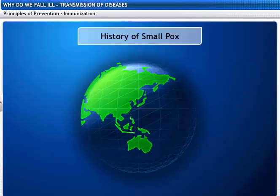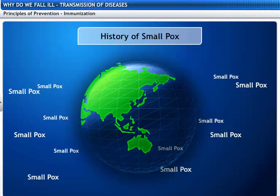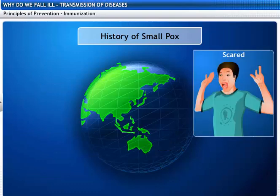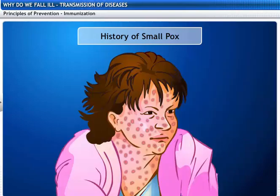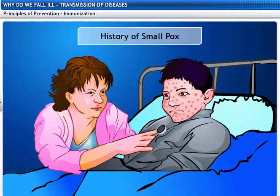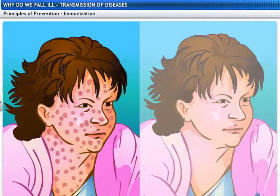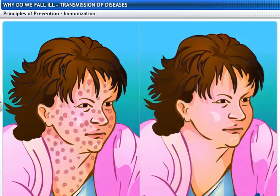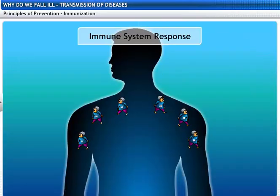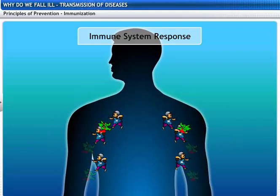Let's see how immunization came into existence. A hundred years ago, smallpox epidemics were common throughout the world. People were scared of catching the disease from the patient. People who already suffered from the disease provided nursing care for the victims of smallpox as they were not likely to catch the disease again. When the immune system first encounters an infectious microbe, it responds against it and remembers it specifically by producing memory cells.